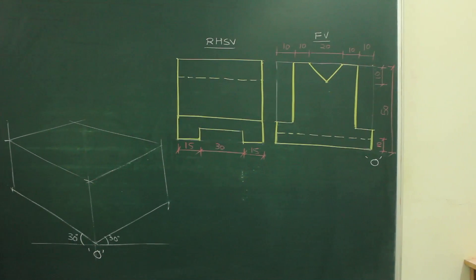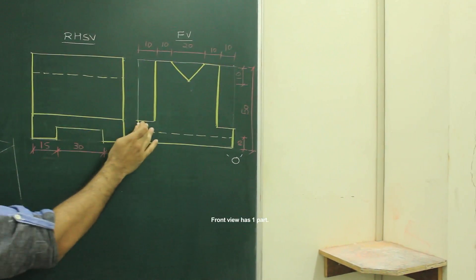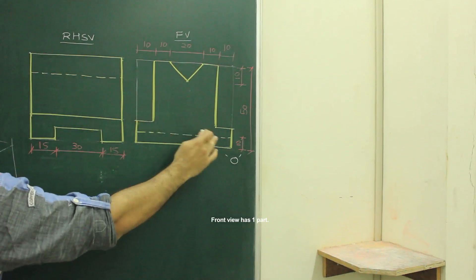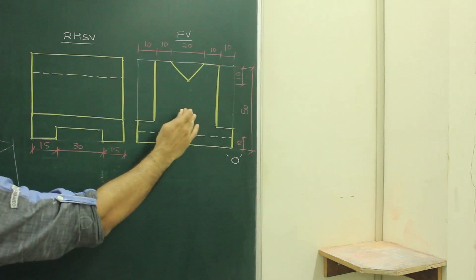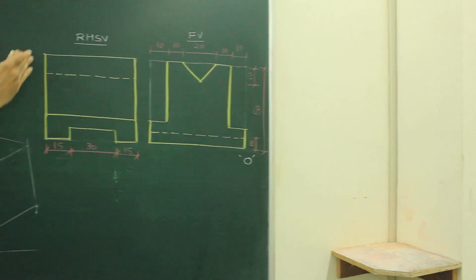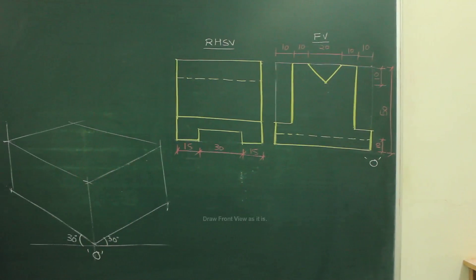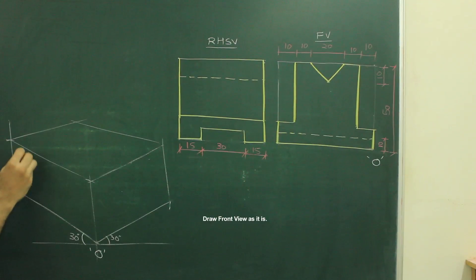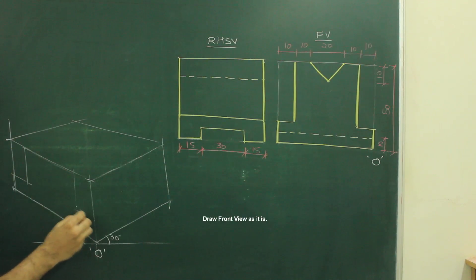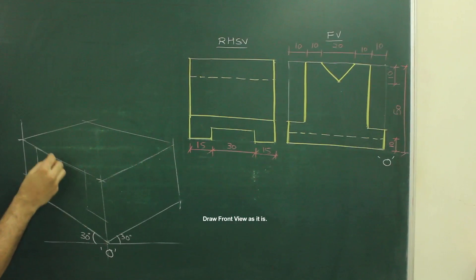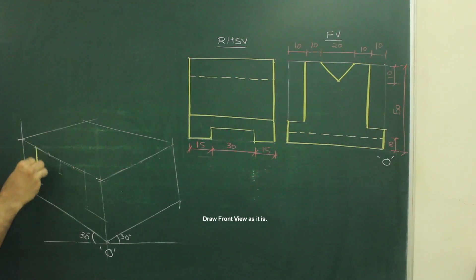After drawing this box, if you see the main diagram and front view, this entire unit is one part only. And if you see the side view, it is straight. So that means this entire unit, we can draw it over here. First, we will draw the front view as it is.